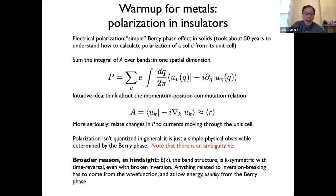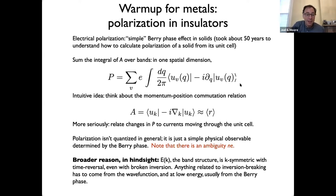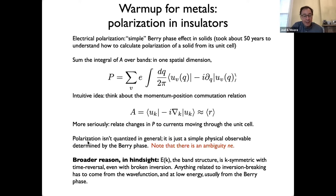The Abelian part of the Berry phase has something to do with where the electron is sitting in the unit cell: if I move the wave function a little to the left, that shifts the polarization. A current flows in the process, and computing that current derives the formula at the top — the modern theory of polarization. A rough idea: A looks a little like position; the serious way is that a change in polarization comes from a current through the unit cell. Electrical polarization in general is not quantized — for example ferroelectrics where you can switch polarization.